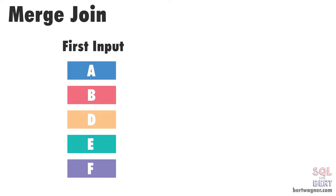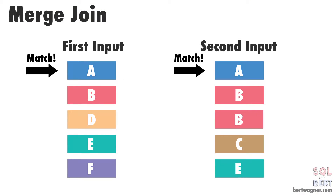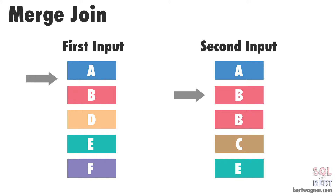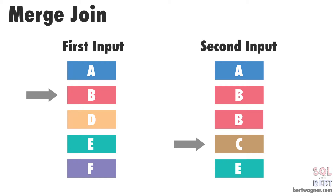Knowing that our input data is sorted, let's talk about how the Merge join algorithm works internally. SQL Server starts by comparing the first rows from both sorted inputs. It then continues comparing the next rows from the second input as long as the values match the first input's values. Once the values no longer match,